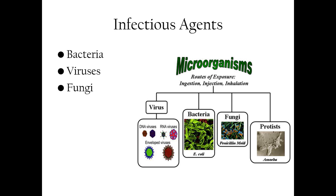Third, fungi — these are organisms like molds and yeast such as Penicillium. While some fungi are beneficial, others can cause infections, particularly in individuals with weakened immune systems. Fourth, parasites — these organisms live on or inside a host, such as amoebas. Parasites can be transmitted through contaminated water, food, or contact with infected individuals. Routes of exposure include ingestion, injection, and inhalation, which emphasizes the need for strict infection control protocols in a phlebotomy setting.